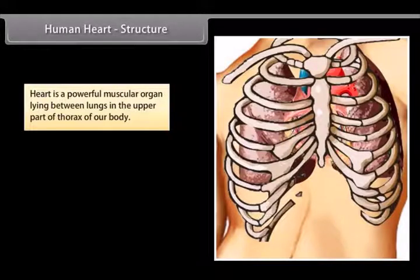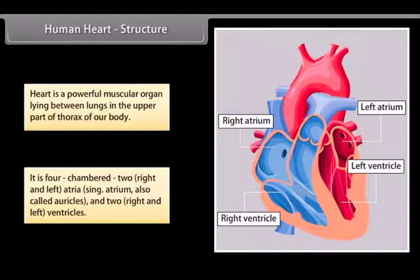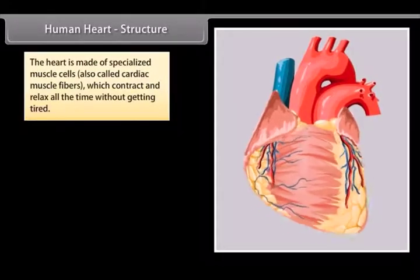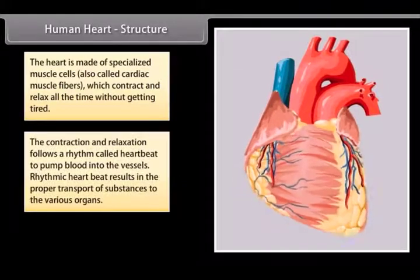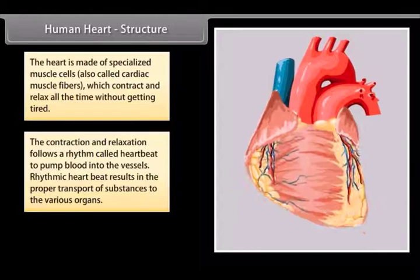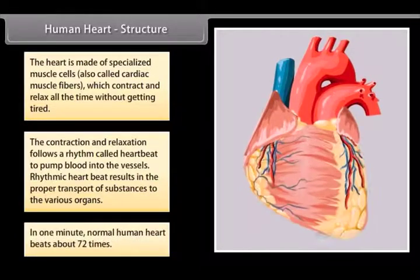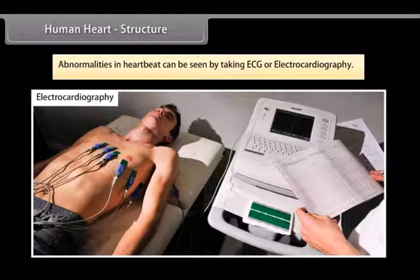The human heart is a powerful muscular organ lying between the lungs in the upper part of the thorax. It is four-chambered: two right and left atria (also called auricles) and two right and left ventricles. The heart is made of specialized cardiac muscle fibers which contract and relax continuously without getting tired. This rhythmic heartbeat pumps blood into the vessels. In one minute, the normal human heart beats about 72 times. Abnormalities in heartbeat can be detected by taking an ECG, or electrocardiography.